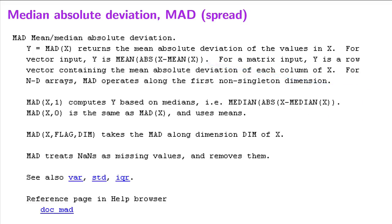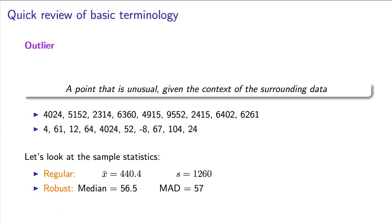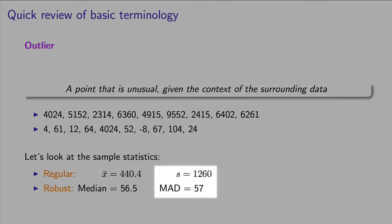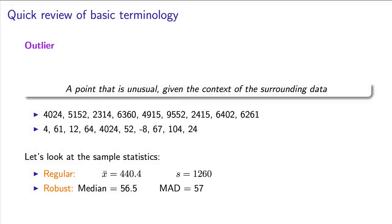Going back to that vector of data, the standard deviation calculated for it is 1,260 — which seems like a very unrealistic spread. The MAD, however, gives a better idea of the spread: 57 units. It is not affected by that outlier.